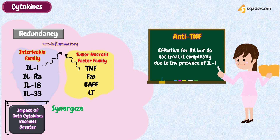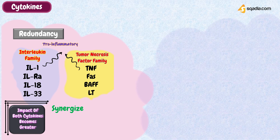This is important clinically because attempting to block the effects of cytokines may not always guarantee clinical outcomes. Anti-TNF monoclonal antibodies are successful at preventing joint damage in rheumatoid arthritis, for example, but do not completely prevent disease because interleukin-1 is also mediating damage.